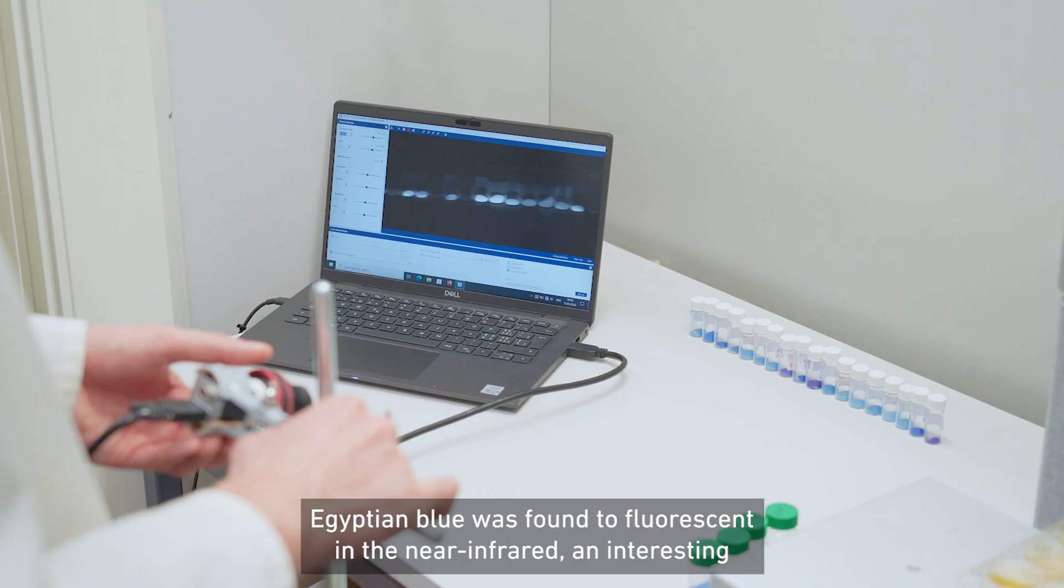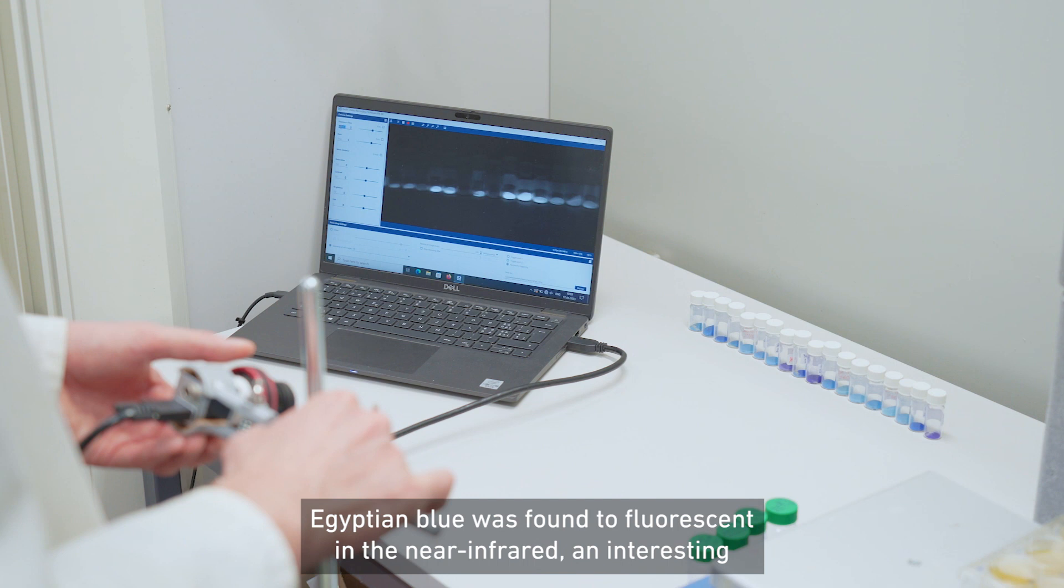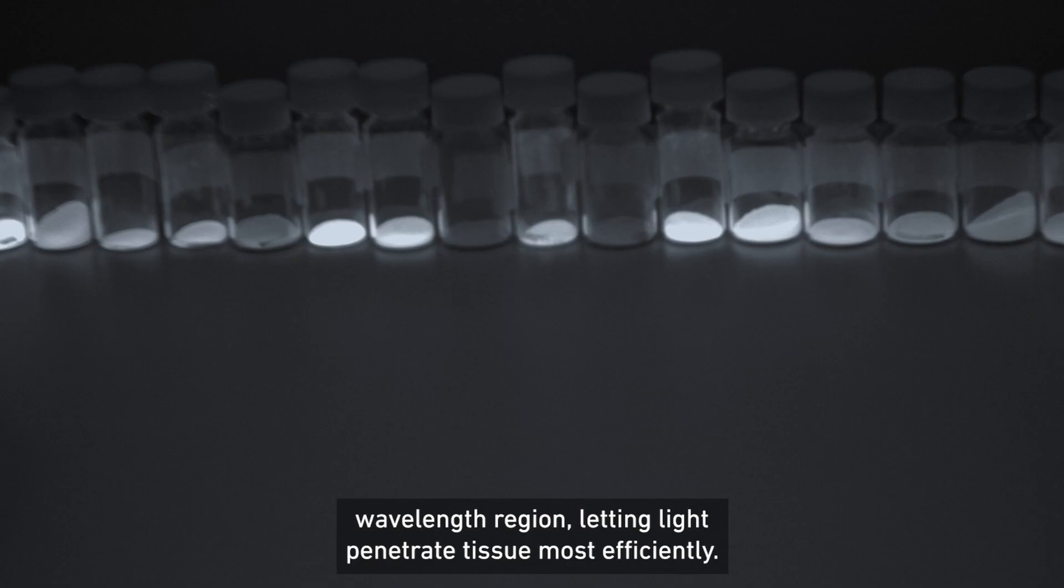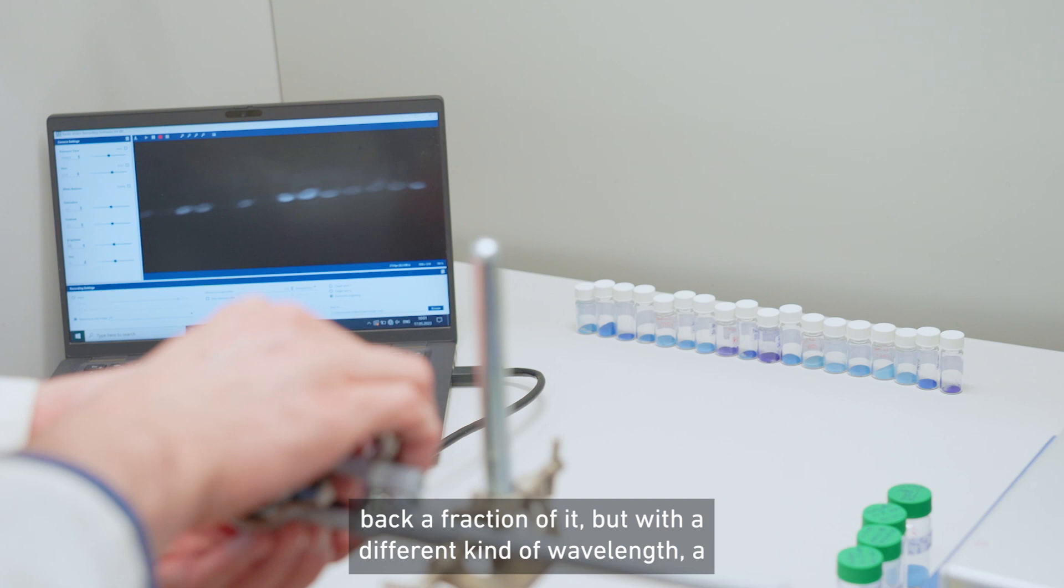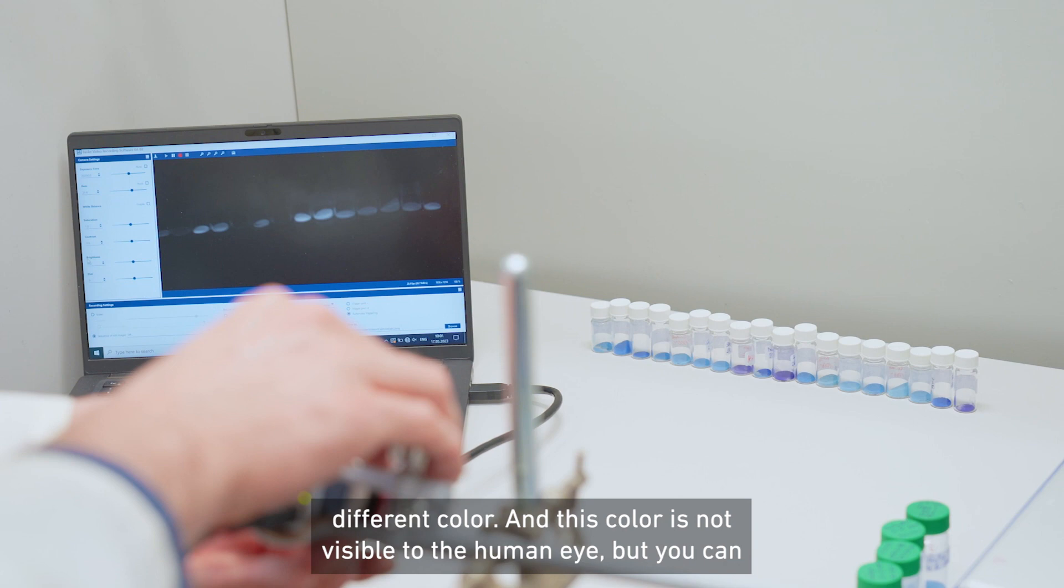Egyptian blue was found to fluoresce in the near infrared, an interesting wavelength region letting light penetrate tissue most efficiently. If you shine light to it, it interacts with the light and sends out a fraction of it with a different wavelength, like a different color. This color is not visible to the human eye, but you can capture it with specific cameras and equipment.